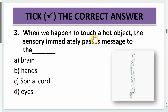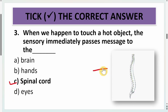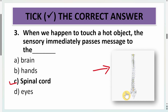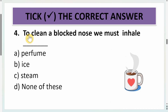Third question: when we happen to touch a hot object, the sensory nerve immediately passes a message to the dash. The options are brain, hand, spinal cord, or eyes. The answer is spinal cord. As you can see from the picture, inside this organ there is a spinal cord that runs through it, and when we touch a hot object, the sensory nerve immediately passes the signal to the spinal cord.